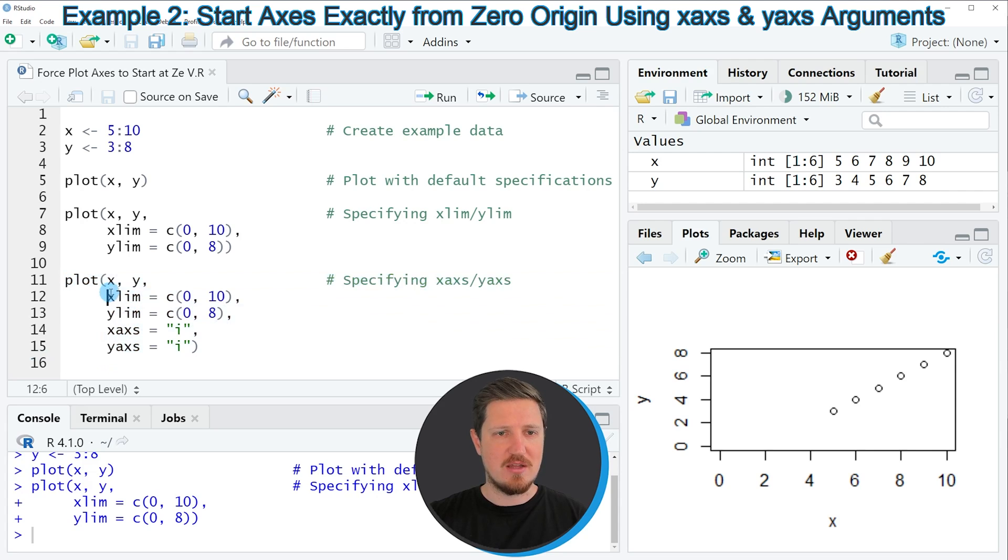In lines 11 to 15 of the code I am applying the same syntax as in the previous example and then I am also specifying the xaxs and the yaxs arguments to be equal to 'i'.